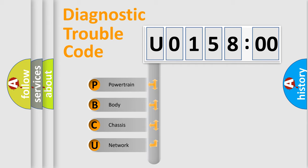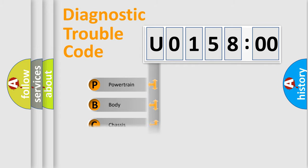We divide the electric system of automobile into the four basic units: Powertrain, Body, Chassis, and Network.